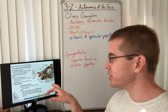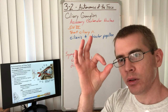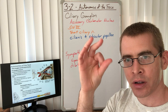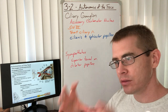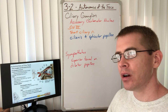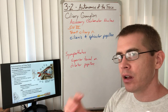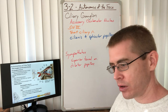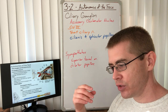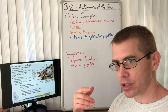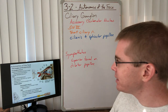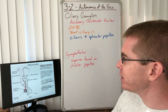The ciliaris muscle is also contracted by parasympathetics, causing the radius to shorten, decreasing the size of the opening of the ciliaris muscle, and producing a larger, more bulbous lens — which gives you near vision. That is the extent of the postganglionic fiber.